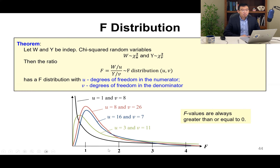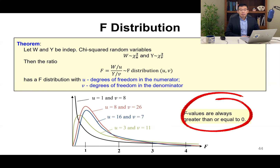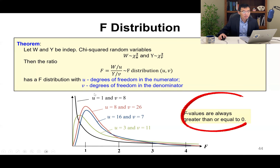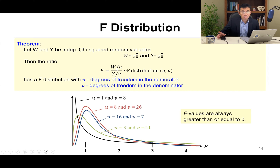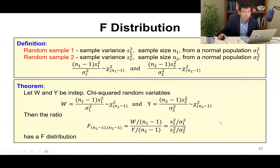One important property: F values are always greater than or equal to 0. Why? Because chi-squared random variables are always sums of squares, and the degrees of freedom are also positive. So the ratio is always positive, greater than or equal to 0.